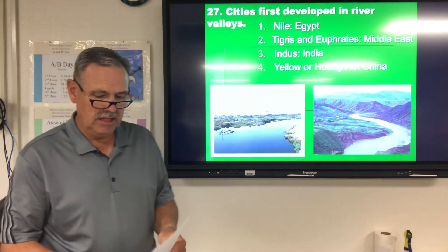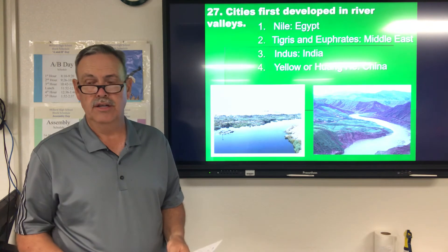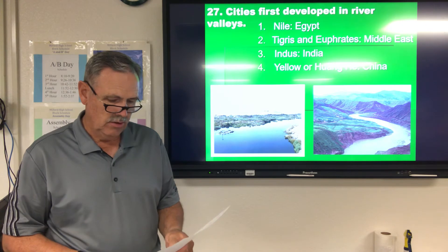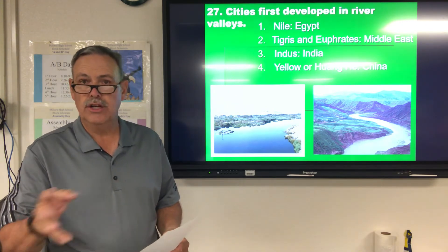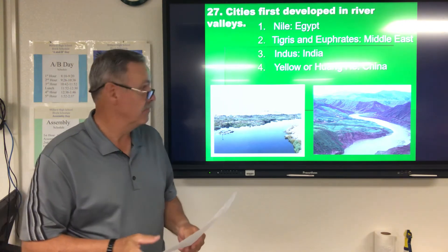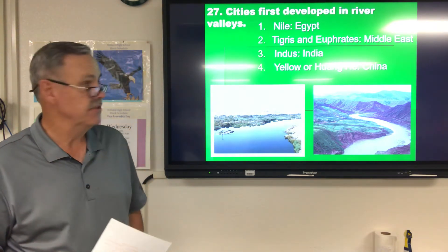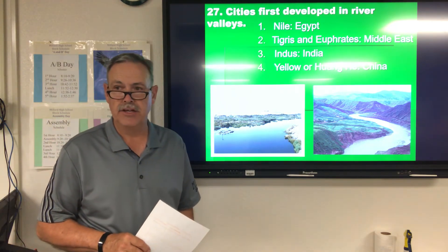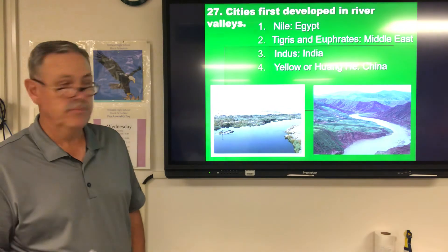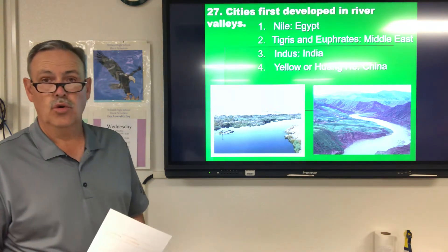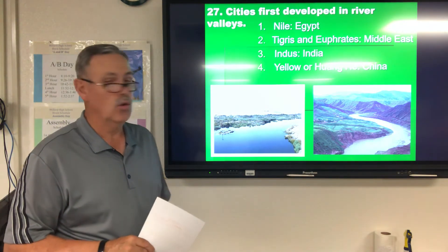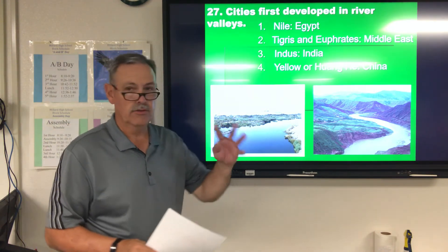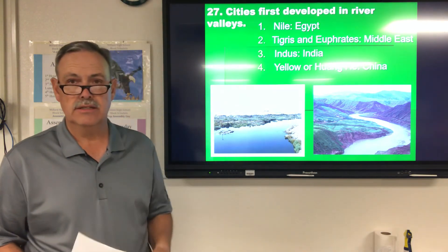Cities first developed in river valleys. As human beings we need water, which is necessary for survival. The four main river valleys where early civilizations began were: the Nile River and the Egyptians; the Tigris and Euphrates in the Middle East, home to the Sumerians and Mesopotamian people; the Indus River in India; and the Yellow or Huang He River in China. These four are where the earliest civilizations began.